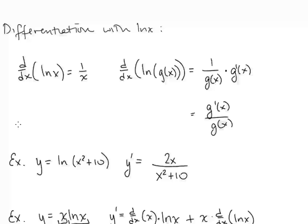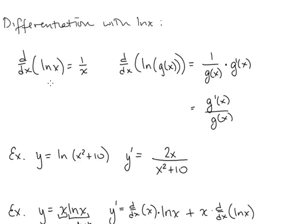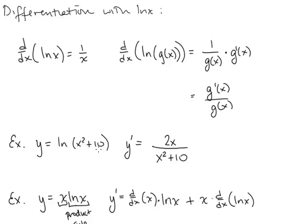Now let's take a look at differentiation with ln x. We know the derivative of ln x is 1 over x. So when we have a composition ln of g of x, we use the chain rule and get 1 over g of x times g prime of x, which gives us g prime of x over g of x. For example, if we have y equals ln of x squared plus 10, the inside function g of x is x squared plus 10, so y prime is 2x over x squared plus 10.